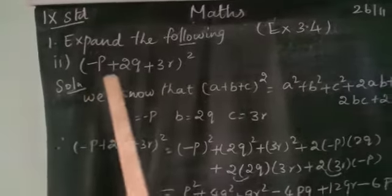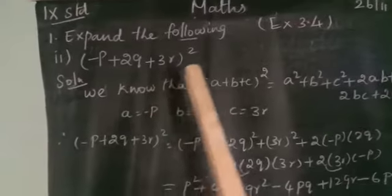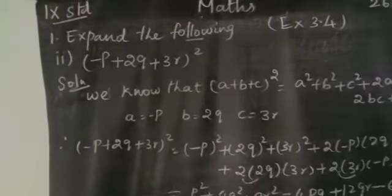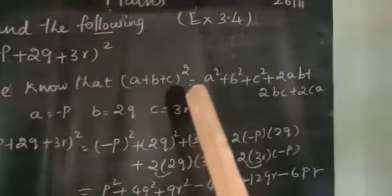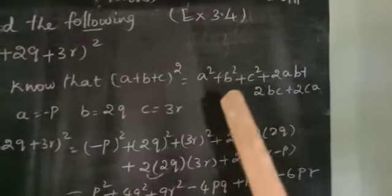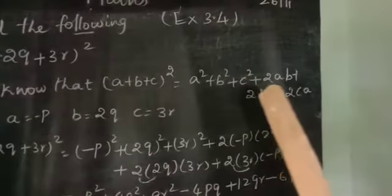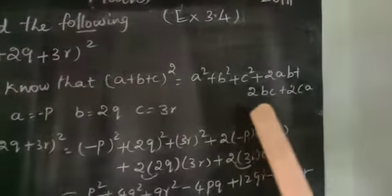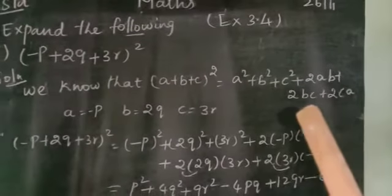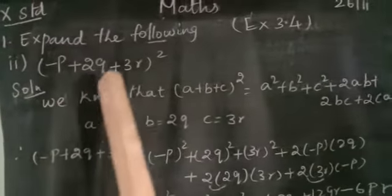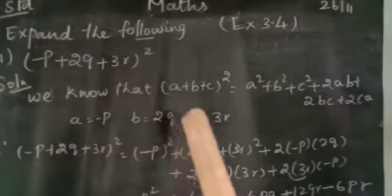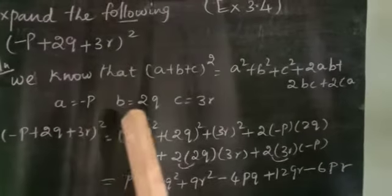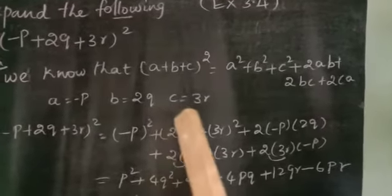Minus p plus 2q plus 3r, the whole square. We know that the algebraic identity: a plus b plus c, the whole square, is equal to a square plus b square plus c square plus 2ab plus 2bc plus 2ca. Now comparing minus p plus 2q plus 3r with a plus b plus c, we get a is equal to minus p, b is equal to 2q, and c is equal to 3r.